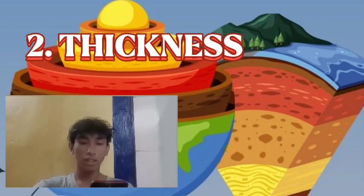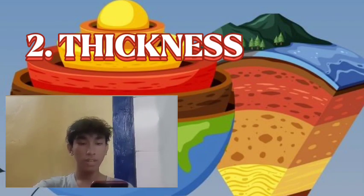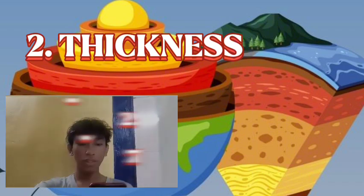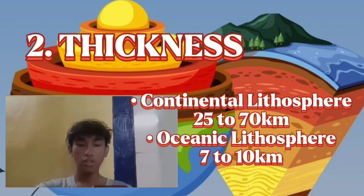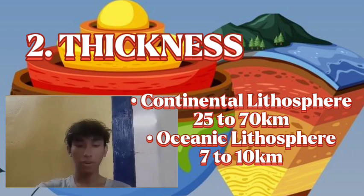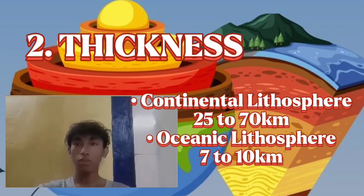Second, Thickness. Continental Lithosphere is thicker than Oceanic Lithosphere. Continental thickness can range from 25 to 70 kilometers, while Oceanic is only 7 to 10 kilometers.